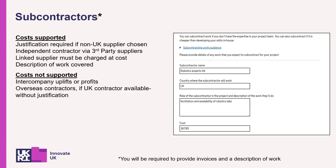If your subcontractor costs are going to be significant, then you will need to justify who, why, and what you need them for. It is important that you justify the use of subcontractors within your application, especially those that are non-UK-based, so the assessors can decide if these costs are reasonable. If you use a parent or sister company, please ensure you list the cost price, not inclusive of profit.